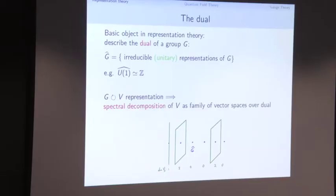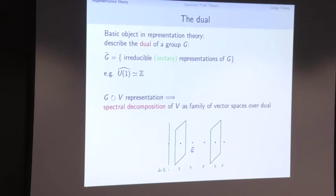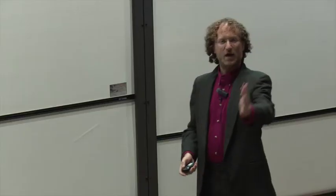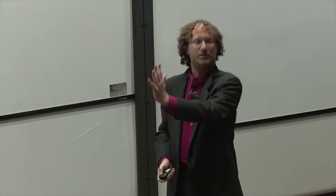One of the first aspects of this relation is that if we have a representation of the group — a vector space on which the group acts — we can spectrally decompose it. We break it up into generalized eigenspaces. We can picture a representation V spread out over the set G-hat, where for each irreducible unitary representation we record a multiplicity space showing how many times it appears. Any representation breaks up into a family of vector spaces labeled by G-hat.